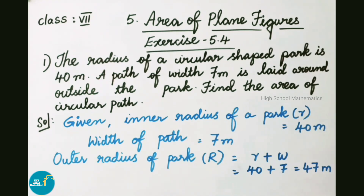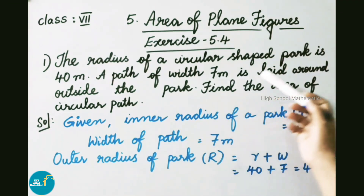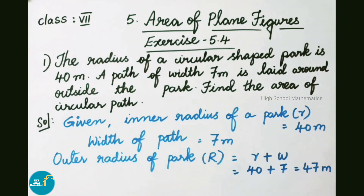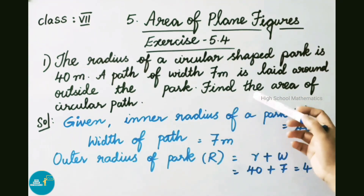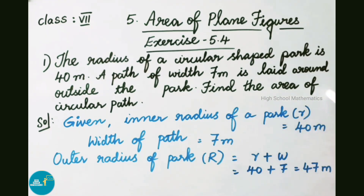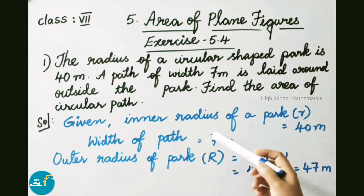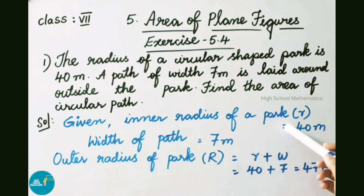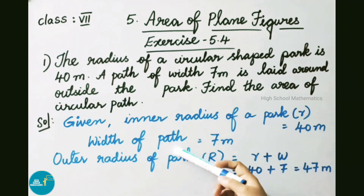Question number 1: The radius of a circular shaped path is 40 meters. A path of width 7 meters is laid around outside the park. Find the area of the circular path. Let us see the solution. Given: inner radius of park, denoted as small r, is 40 meters. Width of path is 7 meters.